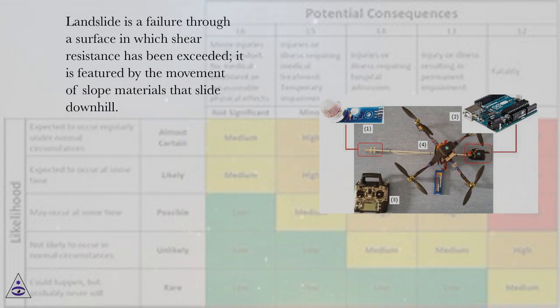A landslide is a failure through a surface in which shear resistance has been exceeded, featured by the movement of slope materials that slide downhill.